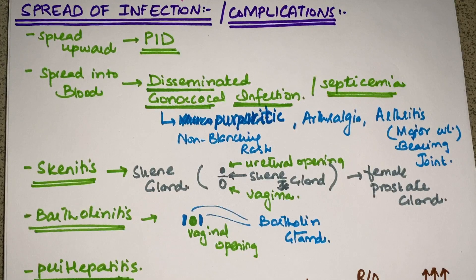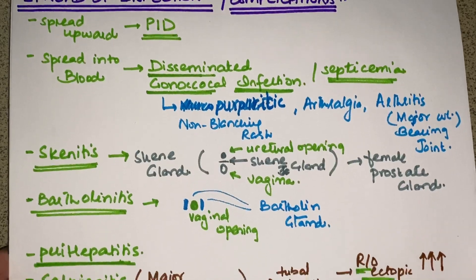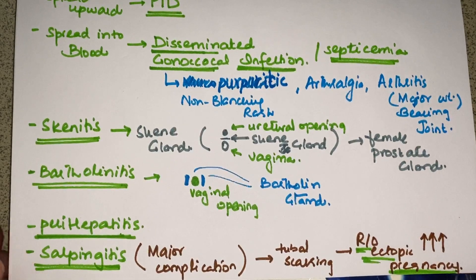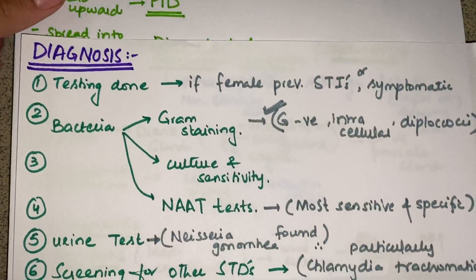It can also spread to the liver, causing perihepatitis. Regarding the fallopian tubes, they are also involved in the inflammation — this is called salpingitis. Salpingitis is a major complication because it can cause scarring of the tubes, making them more adhesive, leading to a high risk of developing ectopic pregnancy. This is a very important major complication of gonorrhea.